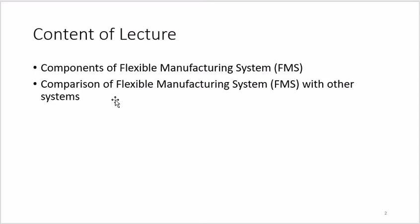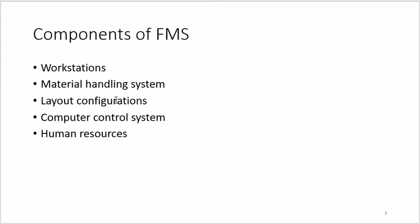Today we are going to discuss the components of flexible manufacturing systems. There are five major components of FMS — FMS stands for flexible manufacturing system, so from now I will use only FMS. The five major components are: workstations, material handling systems, layout configurations, computer control system, and human resources. Although human resources are used very less, they are still present in FMS.